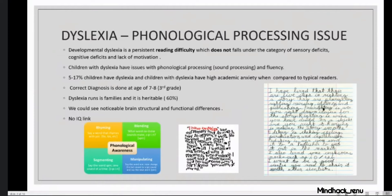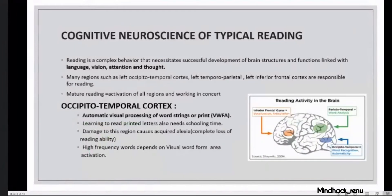Because of all these drawbacks, children with dyslexia face a lot of higher academic anxiety when compared to typical readers. This disability can be diagnosed at third grade, around age 7-8. It is a highly heritable disability that runs in families, and there is no link between IQ — both high IQ and low IQ children can have dyslexia.